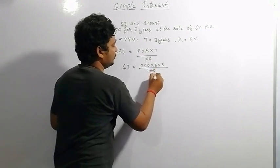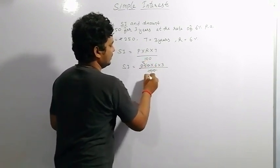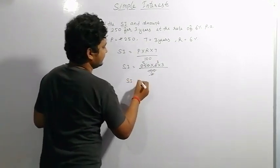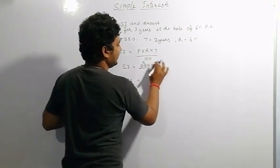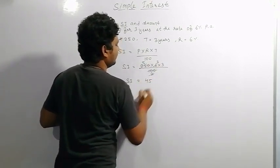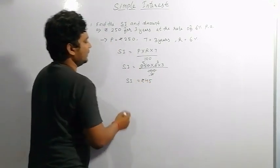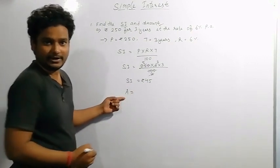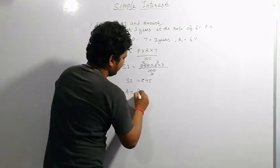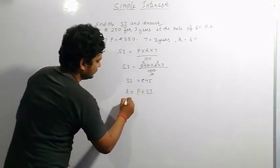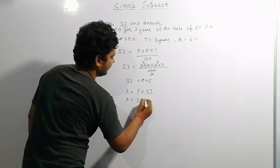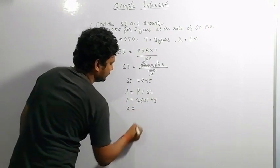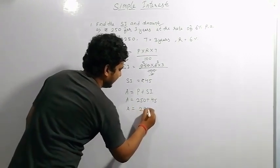So 250 multiplied by 6 multiplied by 3 divided by 100. From 100, we cancel to get 5 times, giving SI equals 5 into 3 into 3, which equals rupees 45. Now calculating the amount: amount equals principal plus simple interest, so 250 plus 45 equals rupees 295.